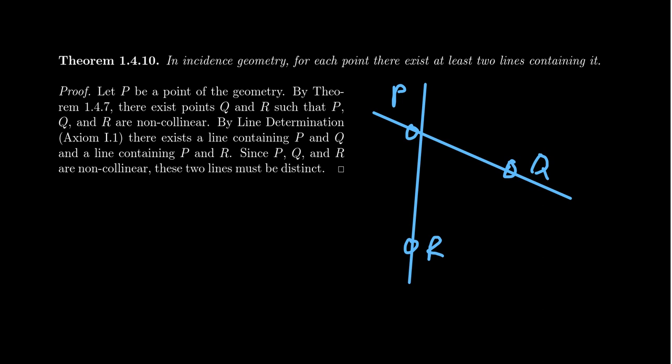There could be more lines through P, but with the incidence axioms, this is all we can guarantee. In three-point geometry, every point is incident to exactly two lines, so anything not true for three-point geometry cannot be a theorem of incidence geometry. We can't guarantee that points are incident to more than two lines because three-point geometry doesn't have that property. This theorem uses theorem 147 and employs line determination, non-collinearity, and point existence.